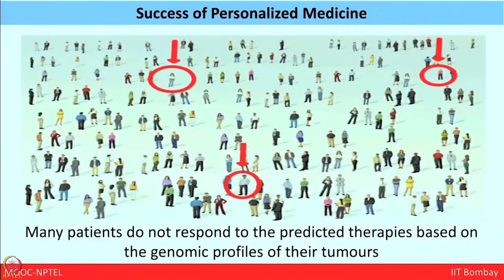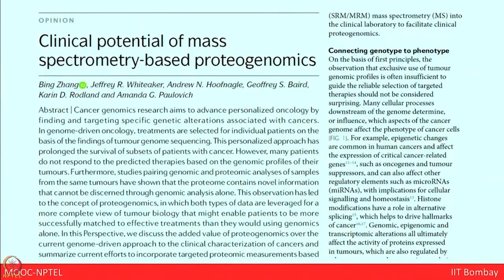After the completion of the human genome project and introduction of genomics into disease pathobiology, there was a hope that genomics can bring revolutionary change in cancer diagnosis and lead to a path to personalized medicine. But the success of personalized medicine with the help of genomics was not that revolutionary. From an overall cohort of patients, only few patients responded to the predicted therapy based on genomic profile. There were still some loopholes present after the successful outcome of genomics. A recent paper published from the Zhang group discusses the clinical potential of mass spectrometry-based proteogenomics, and how this clinical potential can be introduced.